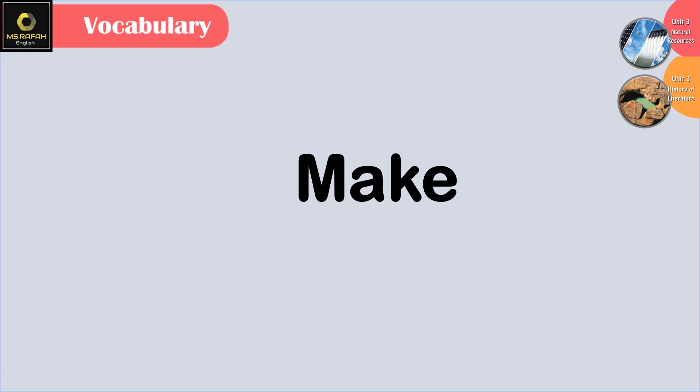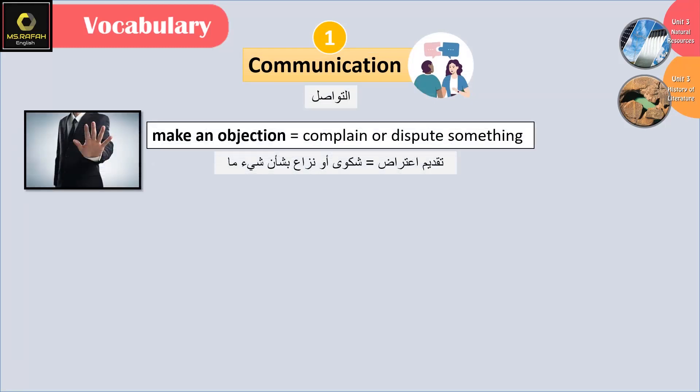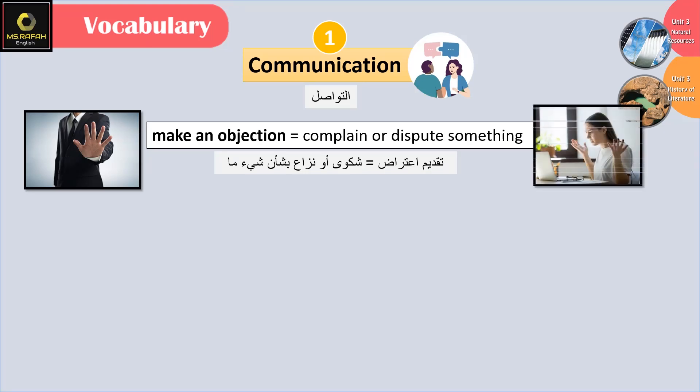First we have 'make'. What are the rules that come with make? Number 1: communication — make an objection. It means to complain or dispute something.